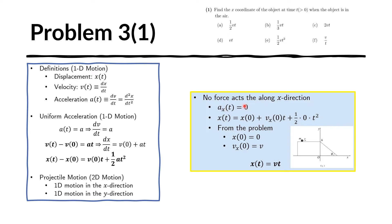If we substitute the acceleration of zero into our equation we are left with x of t equals x of zero plus v-x of zero times t. From the problem we know that at time zero the object is at x equals zero, so x of zero is zero. We also know that the speed along the x direction is v at time zero, because this is a frictionless plane and the object has been moving at speed v right until it reaches this point. Therefore v-x of zero equals v, and substituting we obtain x equals v times t.